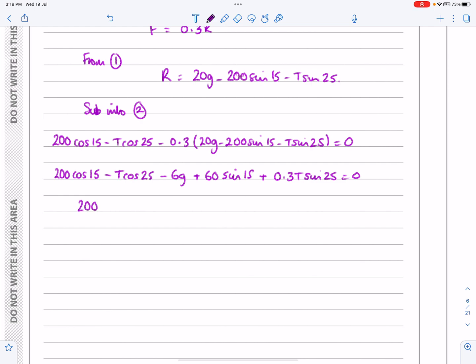200 cos 15 minus 6G plus 60 sine 15 is equal to T cos 25